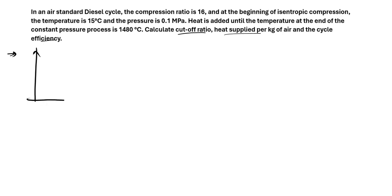If you draw a typical diesel cycle diagram, you have something like this. This is one, two, three, four. Then process 1 to 2 is isentropic compression process. So this is an isentropic compression process.